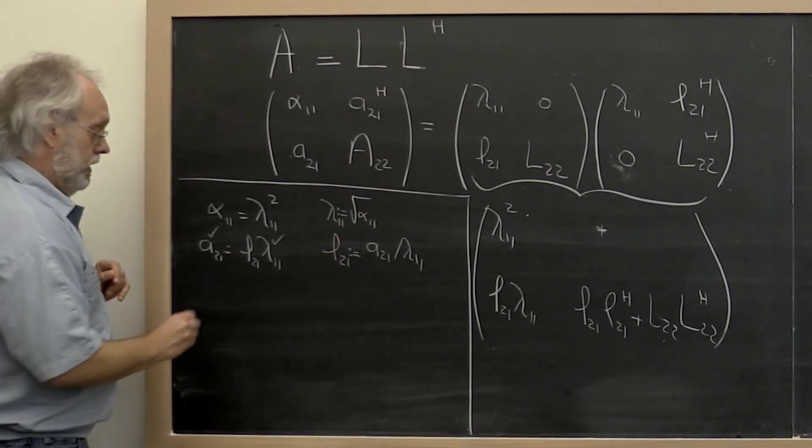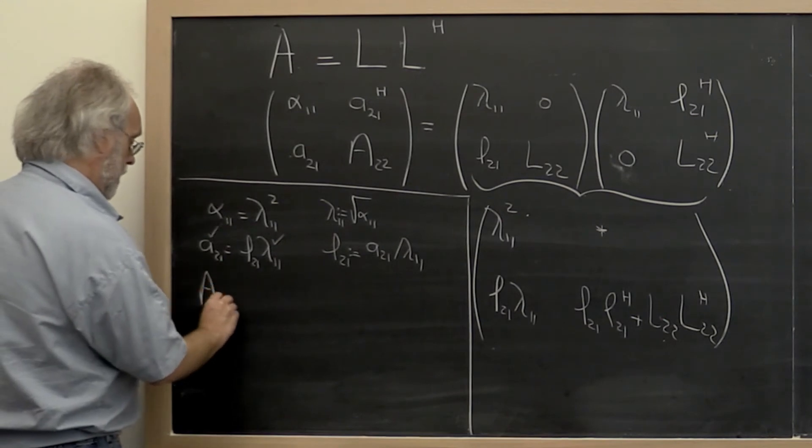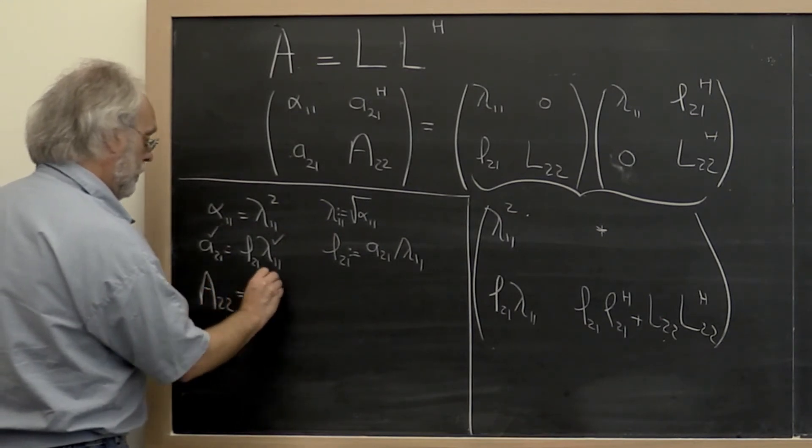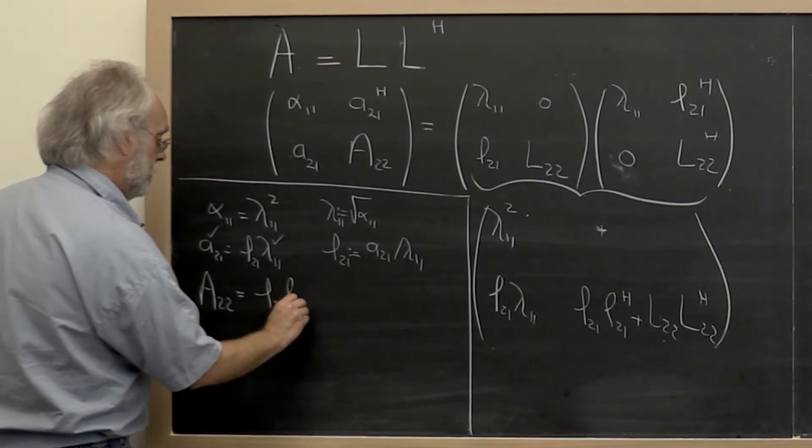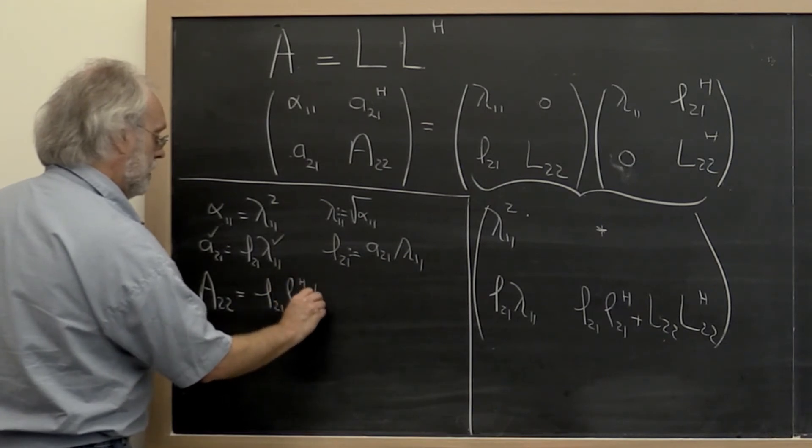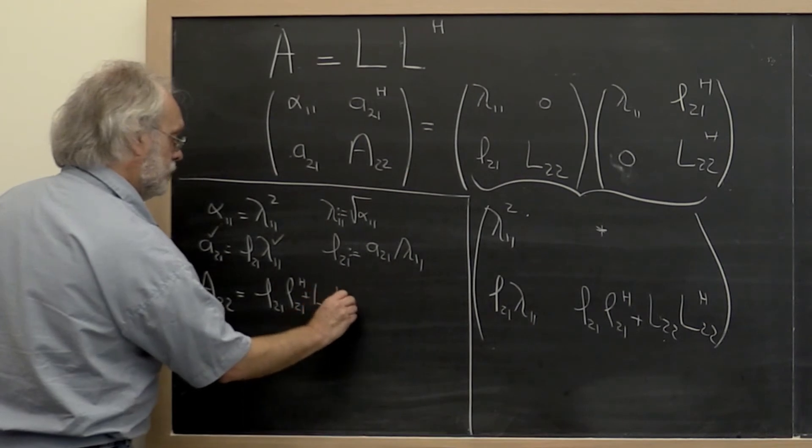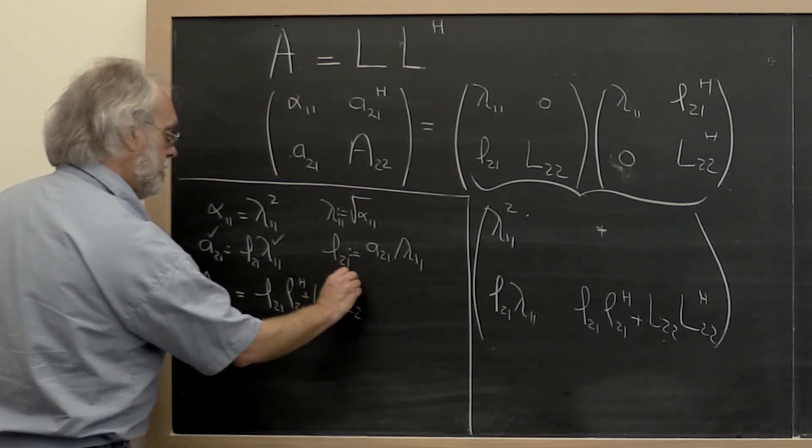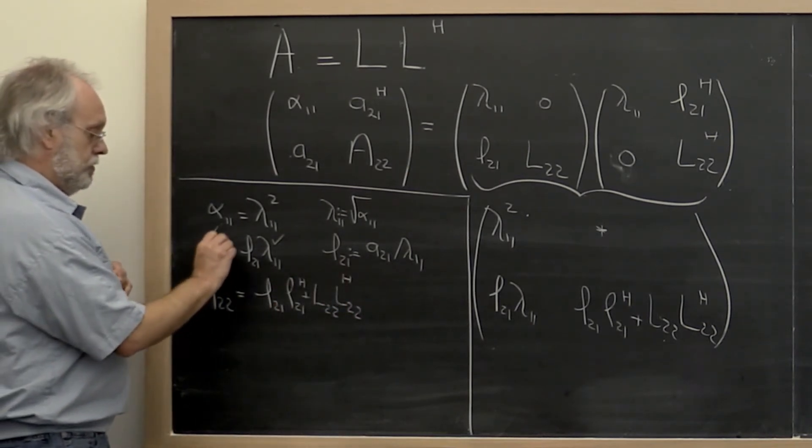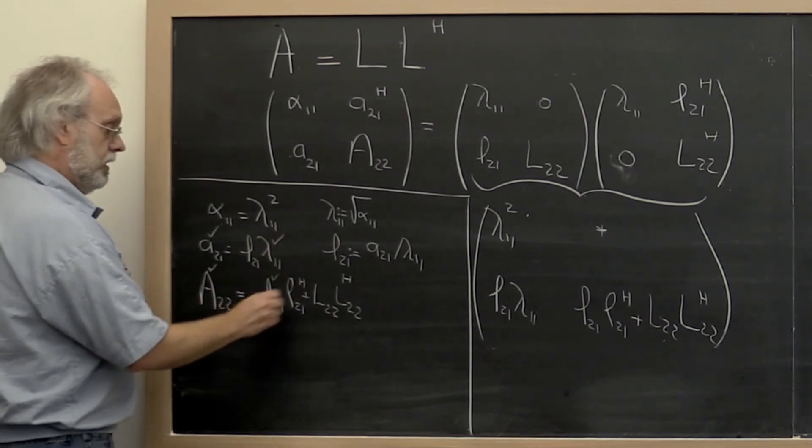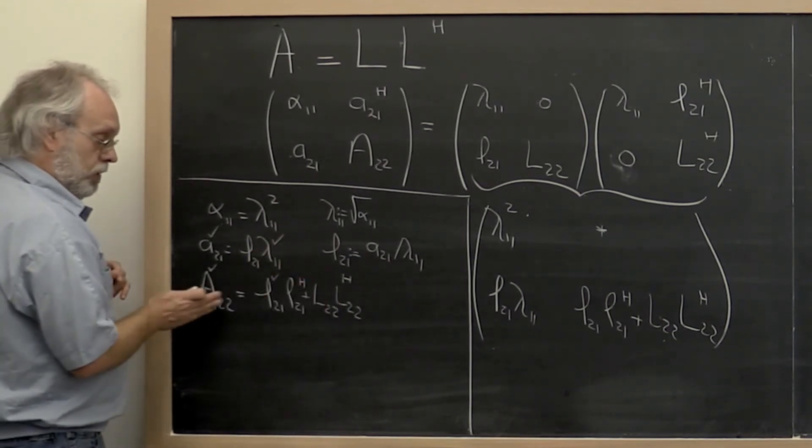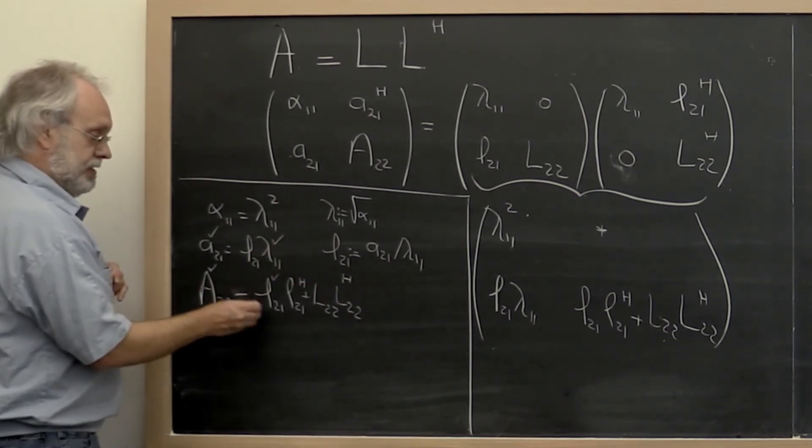And finally, we know that A_2,2 is equal to L_2,1 L_2,1 Hermitian transpose plus L_2,2 times L_2,2 Hermitian transpose. We know what A_2,2 is. We know what L_2,1 is. And therefore we can rewrite all of this as this right here.